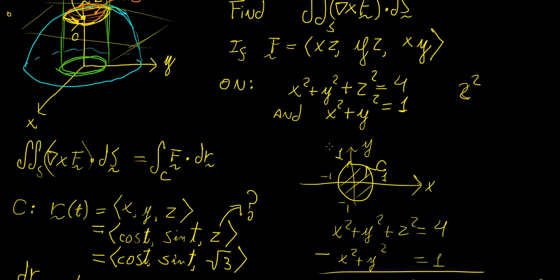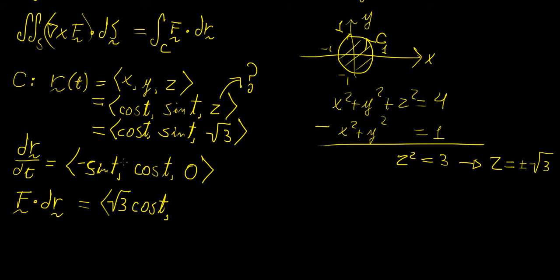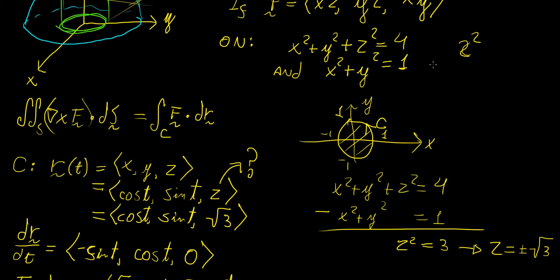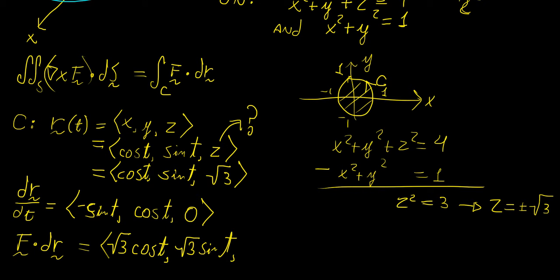The second one is going to be y, z, so that's going to be square root 3 times sine t. And then the last one, which is x, y, that one is going to be cosine t times sine t.